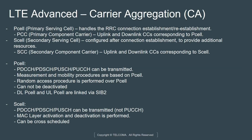The random access procedure, or RACH, is performed on the primary cell first. After a dedicated DRB is established with the primary cell, if additional resources are needed, an S cell is added. The primary cell is always on — there is always connectivity as long as you are in an RRC connected state, so it cannot be deactivated. The downlink P cell and the uplink P cell are linked via SIB2, which contains all the EARFCN information providing the downlink-to-uplink mapping.